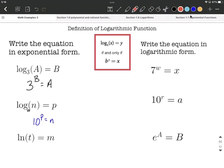Finally, we have natural log of t equals m. By definition, ln natural log is log base e of t. That means the exact same thing.